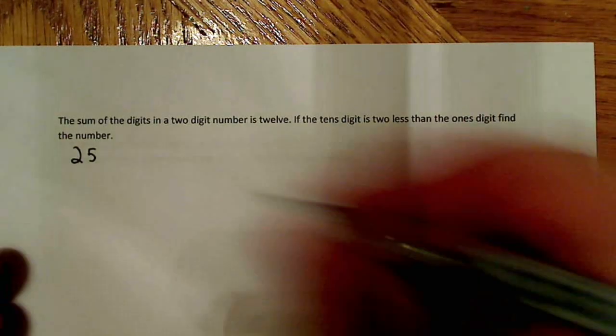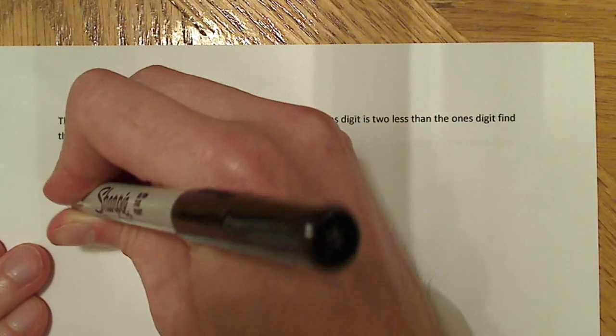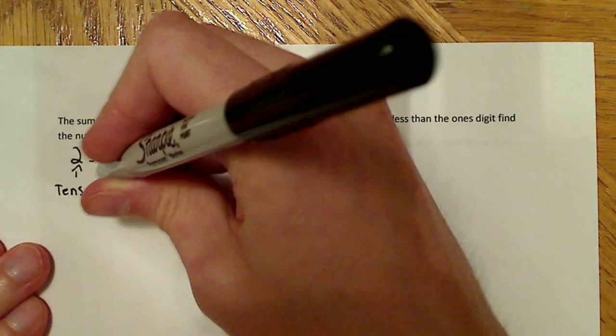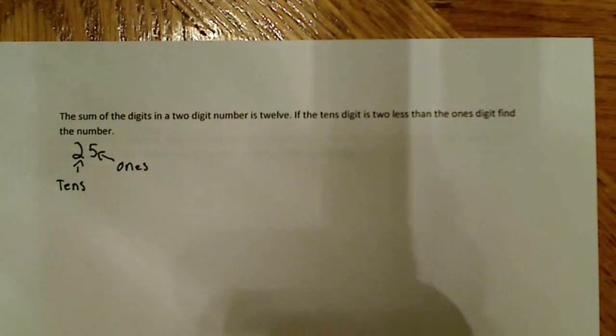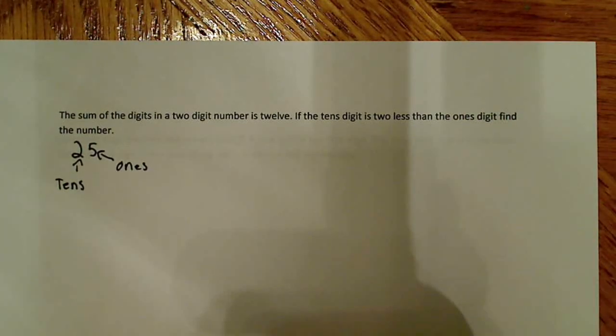Now you might already know this, or maybe you don't, and this is helpful, but this is what's known as the tens digit. That's the tens digit, and this over here is the ones digit. So that's what I'm talking about when I'm talking about a tens and a ones digit.